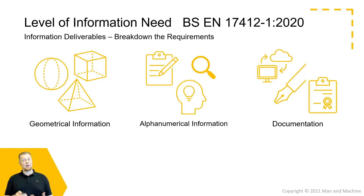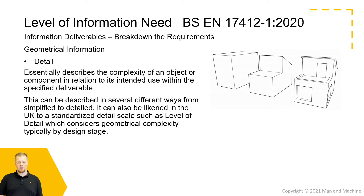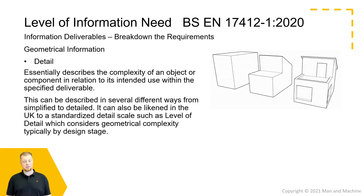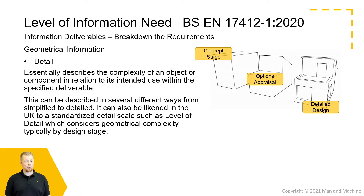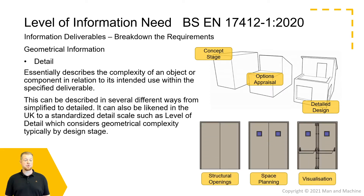Within BS EN 17412, these three core deliverables are also broken down into smaller areas for specification. Starting with geometrical information: historically within PAS 1192 there was a lot of focus around level of detail, but this is now not the only part that needs to be considered. As you can see on screen, we might have different levels of detail required at different stages of a project, but we also need to think about the levels of complexity of individual elements within a building and what they may be used for.